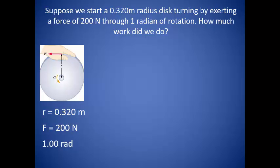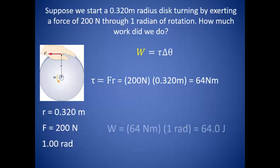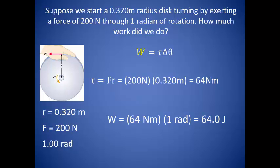Suppose we start a 0.320 meter radius disc turning by exerting a force of 200 newtons through one radian of rotation. How much work do we do? Well, we are given the radius, force, and the rotation, and we know that work is equal to the net torque times the angle of rotation. Remember that torque is the force applied to the radius, so we can solve for that with our given information. From there, we can multiply our torque by the number of radians, which is 1, and we have 64 joules of work done.